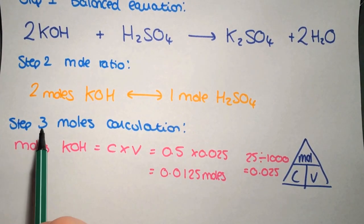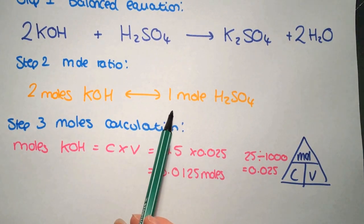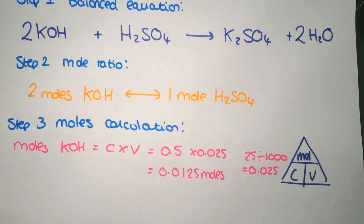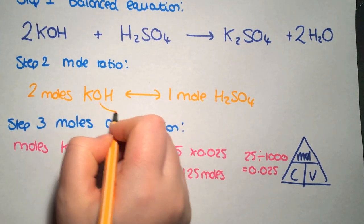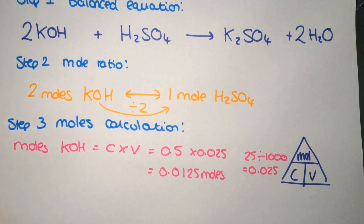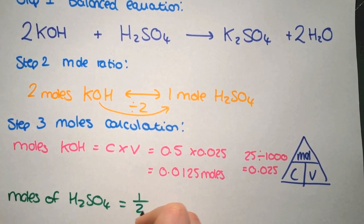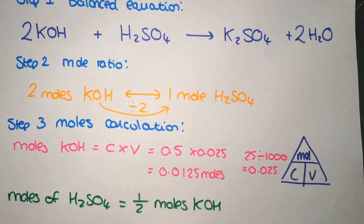Now we look at the mole ratio. For every 2 moles of KOH we need 1 mole of sulfuric acid, so to convert from moles of KOH to moles of H₂SO₄ we divide by 2. Moles of H₂SO₄ equals half of 0.0125, which gives us 0.00625 moles.